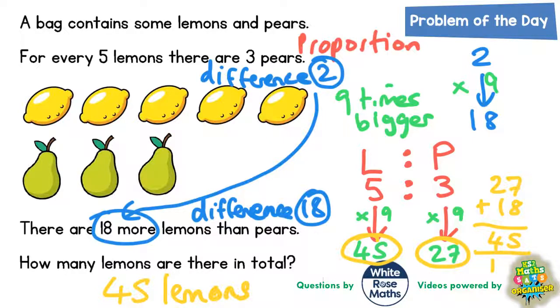So it is 45 lemons, 18 more lemons than pears. If the pears is 27 plus the 18, that gives you your 45 lemons, so everything seems to make sense. The final answer must be 45 lemons.